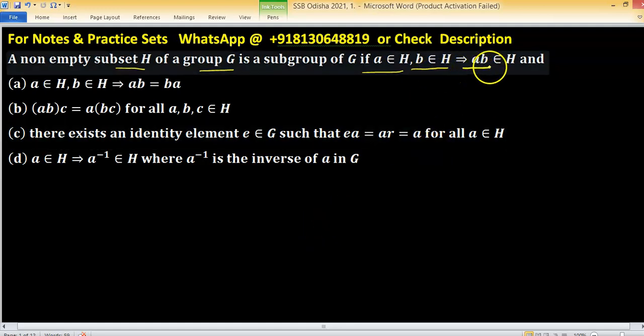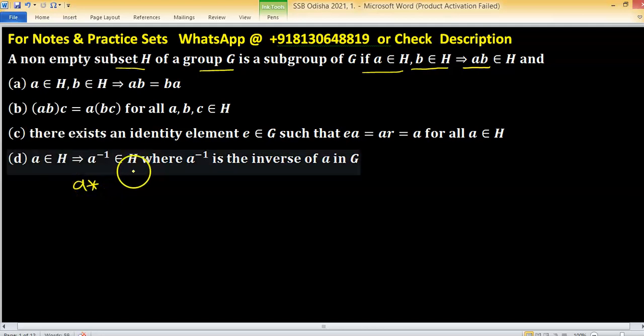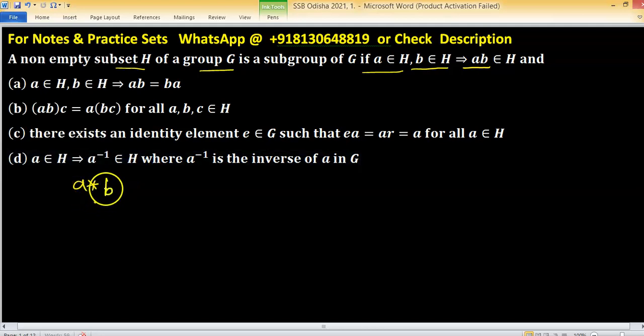Then they are closed. A dot B means there is an operation either denoted by dot or star. After applying operation on A and B, it belongs to the set. This property is known as closure property.